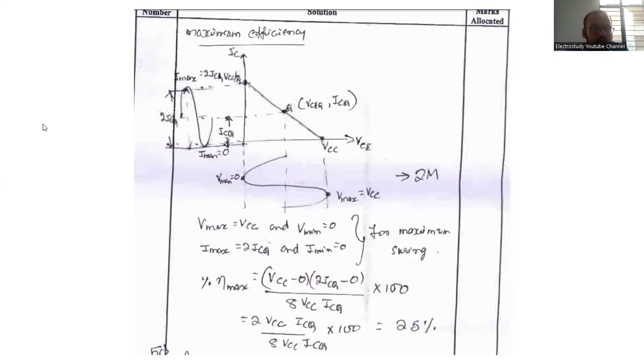This is the standard formula for computing the efficiency output by input. For this case output will be how much, this is your output part. Look at this. And this will be the input part. You will be getting, if you solve it, you will be getting around 1 by 4, that is 25%. That is also one of the important questions for your exam point of view. Similarly, class B and class C you can anticipate.